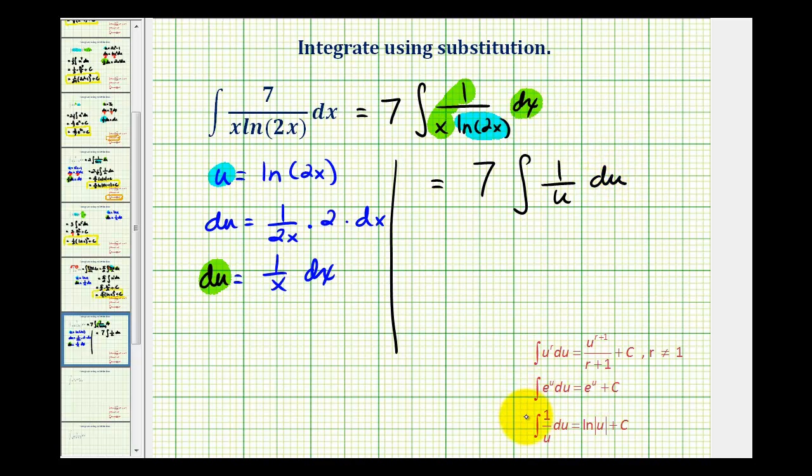And now we can apply the integral formula given here. So we'll have seven times the anti-derivative of one over u with respect to u is natural log absolute value u plus c, but u is natural log two x. So we'll have seven natural log natural log two x plus c.